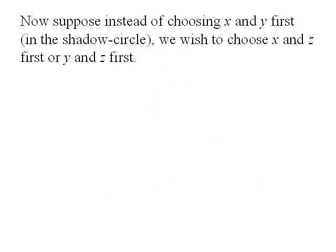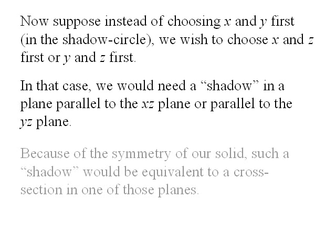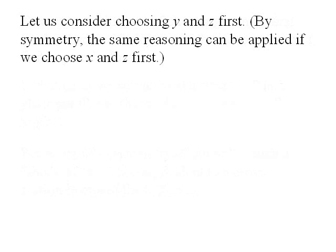Now, suppose instead of choosing x and y first in the shadow circle, we wish to choose x and z first, or y and z first. In that case, we would need a shadow in a plane parallel to the x-z plane or parallel to the y-z plane. Because of the symmetry of our solid, such a shadow would be equivalent to a cross-section in one of those planes. Let's consider choosing y and z first; by symmetry, the same reasoning can be applied if we choose x and z first.